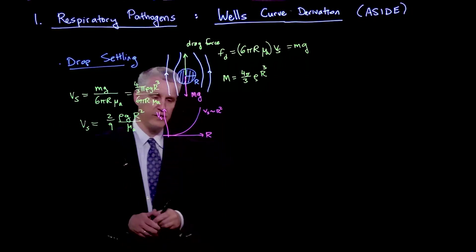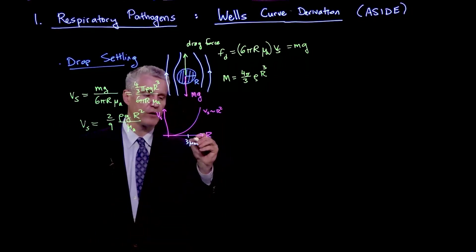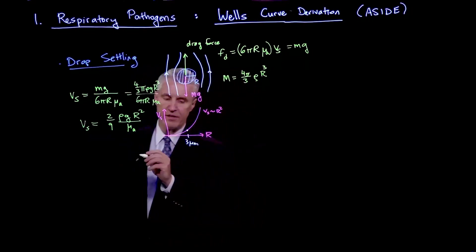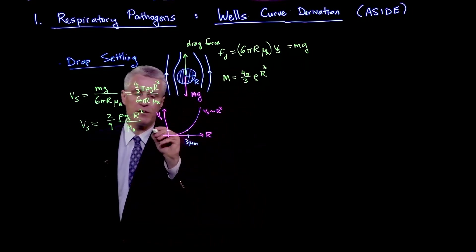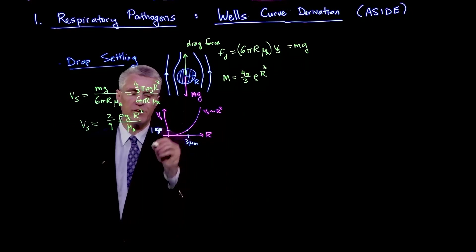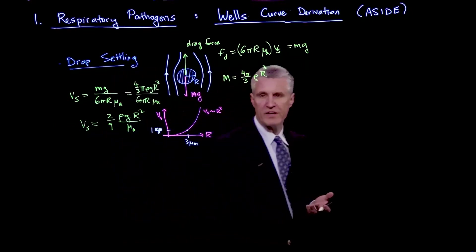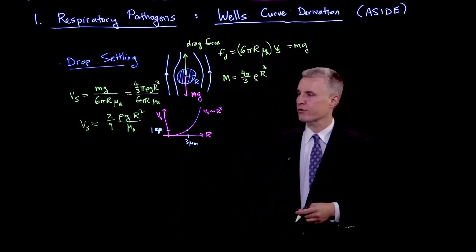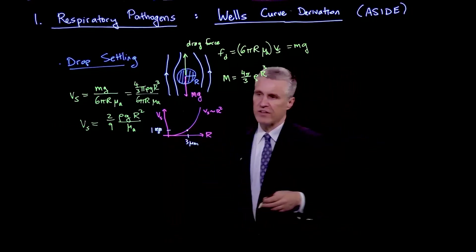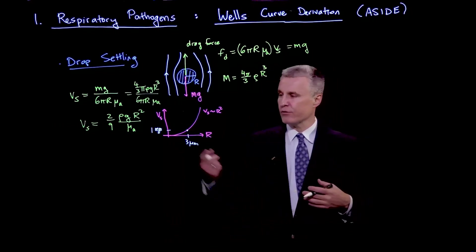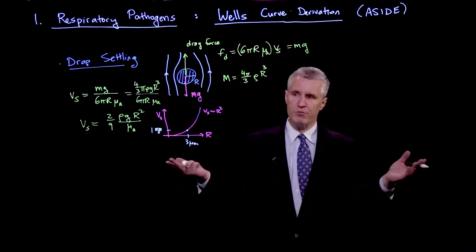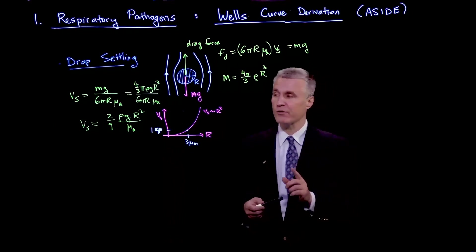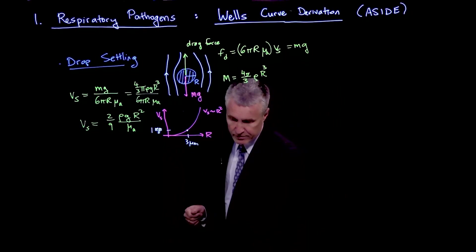To put a scale on that, if we have a particle that is 3 microns, so that's really an aerosol particle, then the settling speed is around 1 millimeter a second, if we use the density of water and the viscosity of air for this formula. That's already a fairly slow settling speed. You can already see the particles that are in the micron range will be suspended in the air for a long period of time, as long as they don't evaporate away.